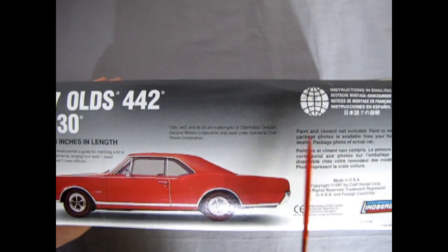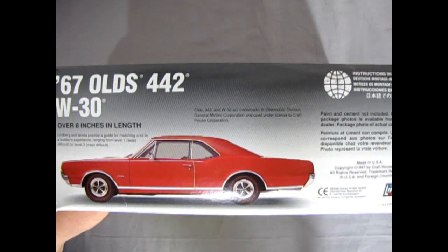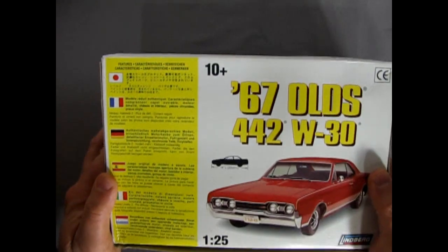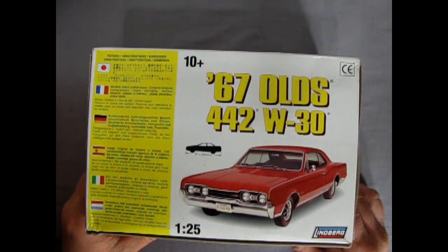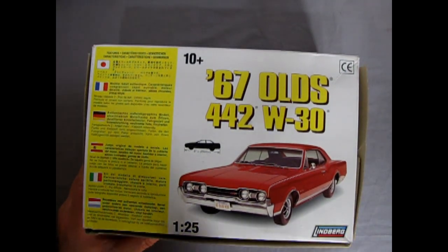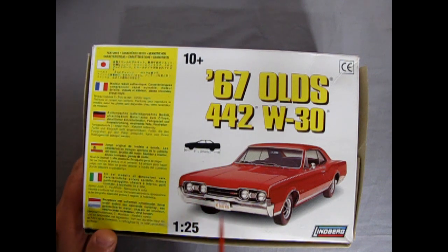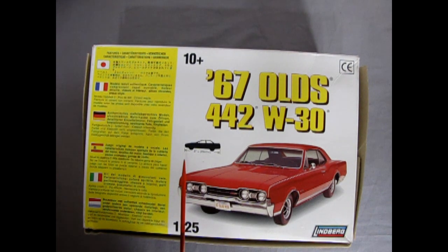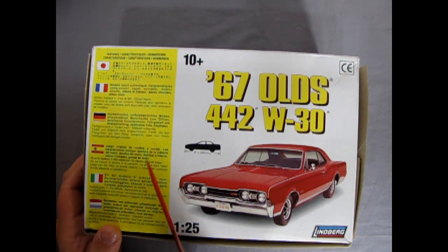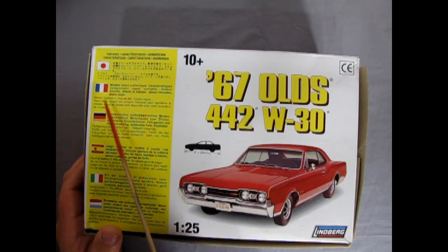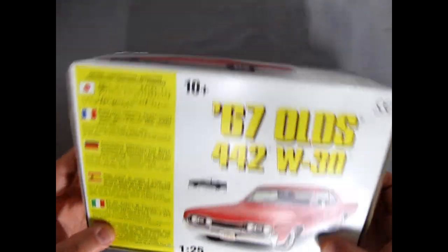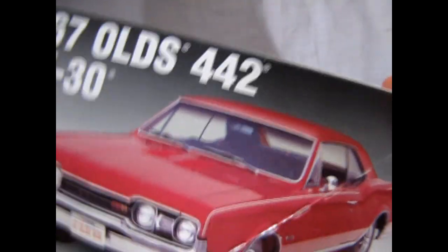Paint and cement not included. There's the world symbol, Lindbergh again, over eight inches in length. The bottom of the box actually has some detail to it as well. Ages 10 and up, eight inches long, and then it shows the car itself. Funny that they used a more modern type of car for the measurements. 125th scale. And then we've got Japanese, French, German, Spanish, Italian, and Dutch flags for different languages.